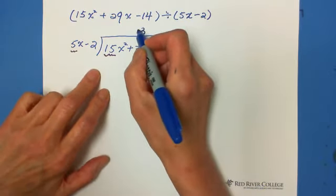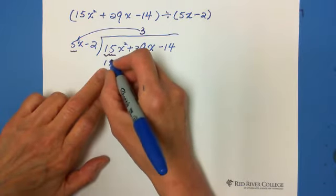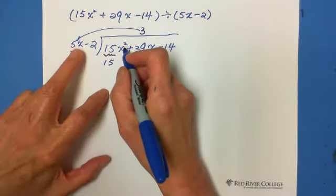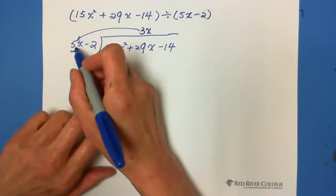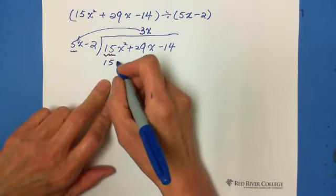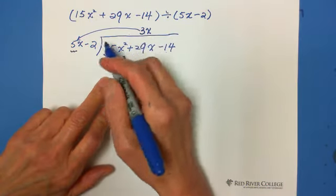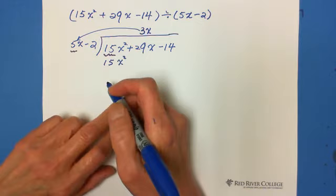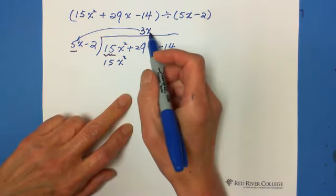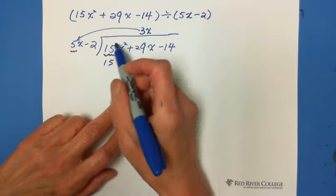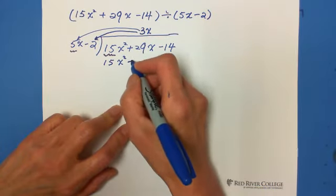And this is x squared. So this is x, that's why you need another x. That means 3x multiply 5x equals 15x², right? You need exactly the same as 15x² so that we can cancel out. The next second term is 3x multiply negative 2 becomes negative 6x.